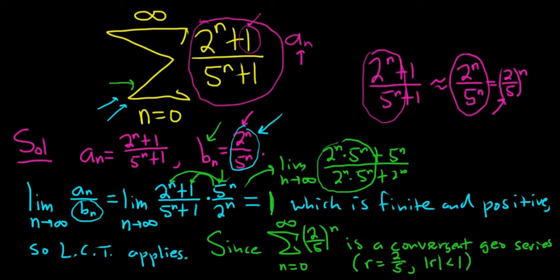Remember if the absolute value of r is greater than or equal to 1, it will diverge. If the absolute value of r is less than 1, it will converge. So this series converges.